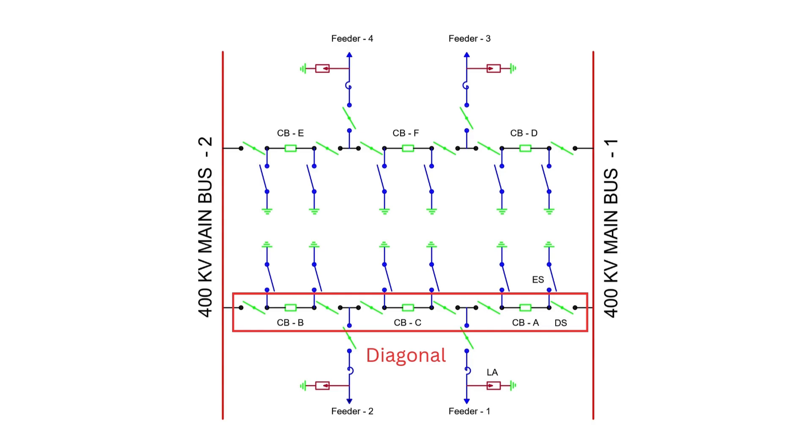A bay of three breakers in this scheme is called a diagonal. In the diagram, we see two diagonals. A feeder is connected between the two breakers, circuit breaker A and circuit breaker C, as well as circuit breaker B and circuit breaker C.